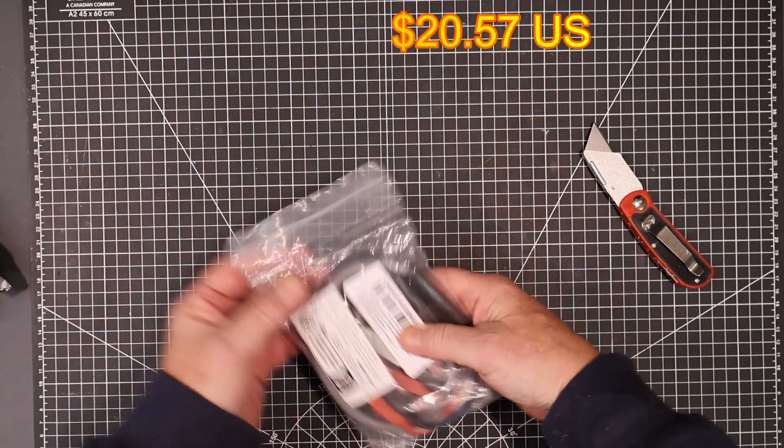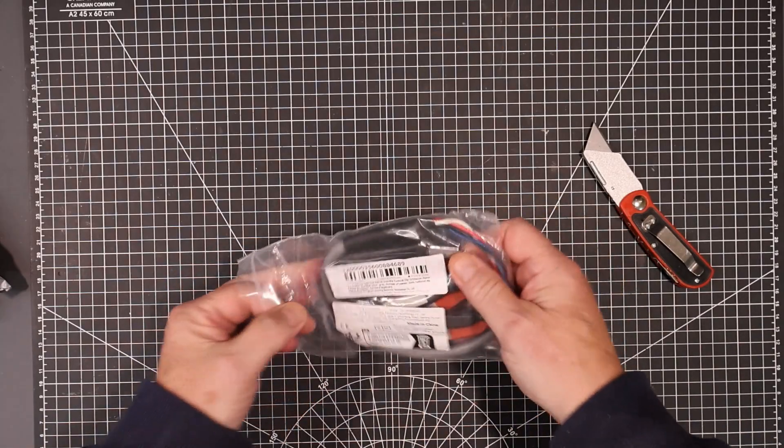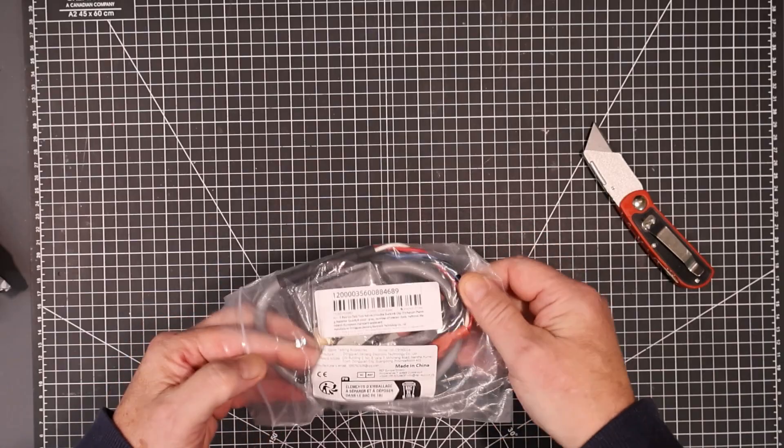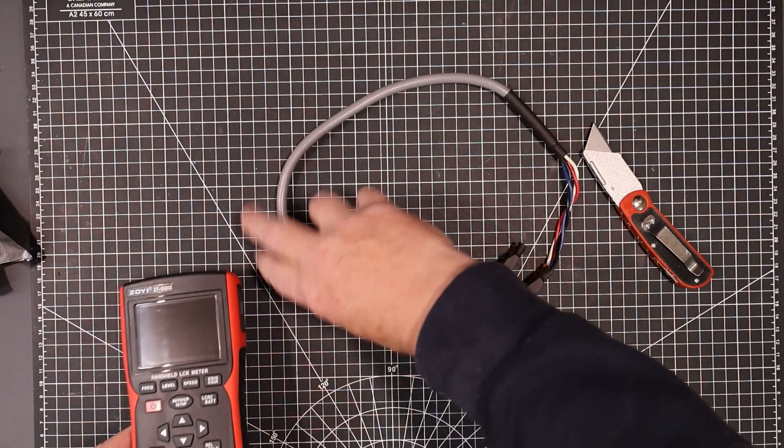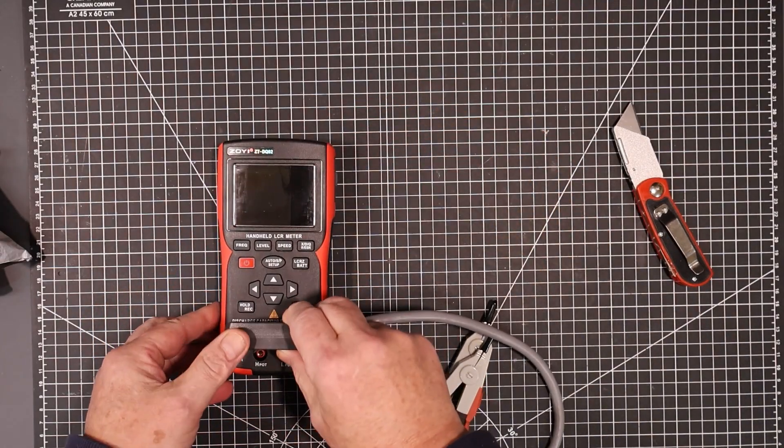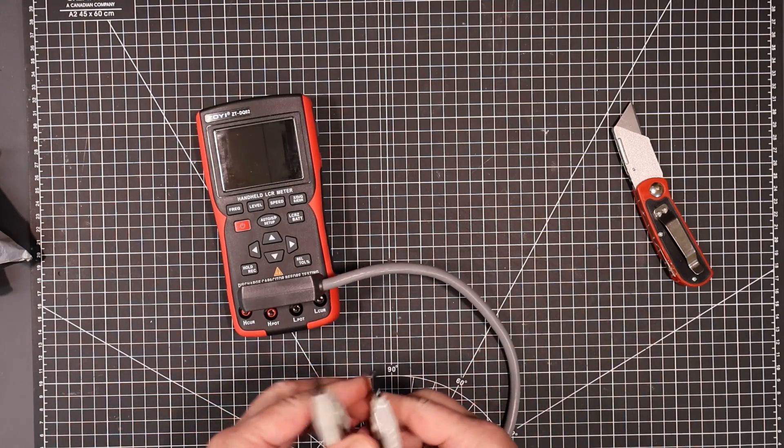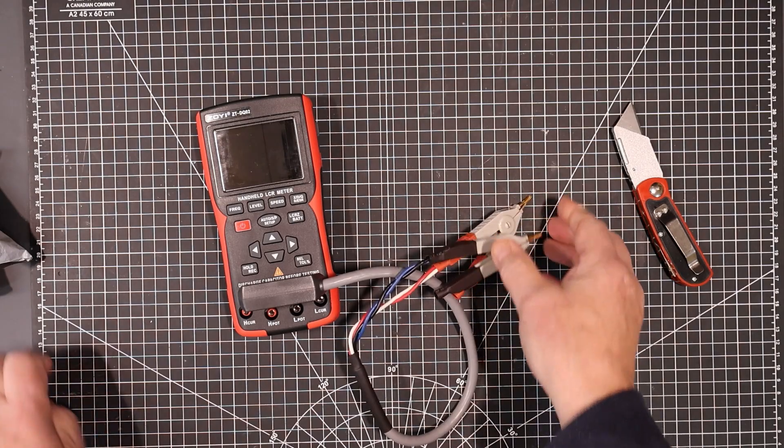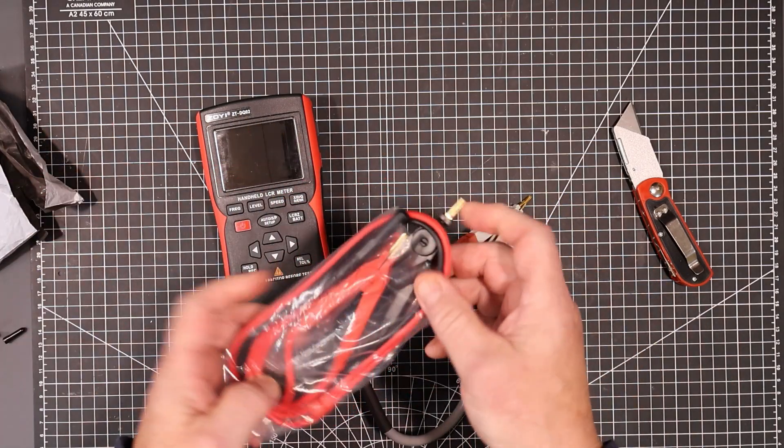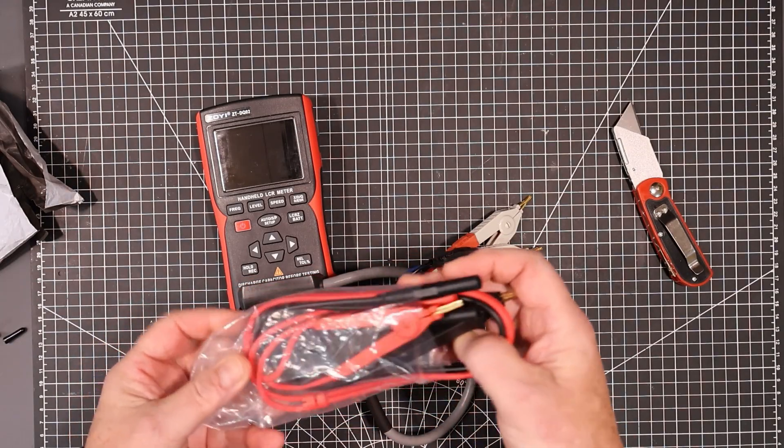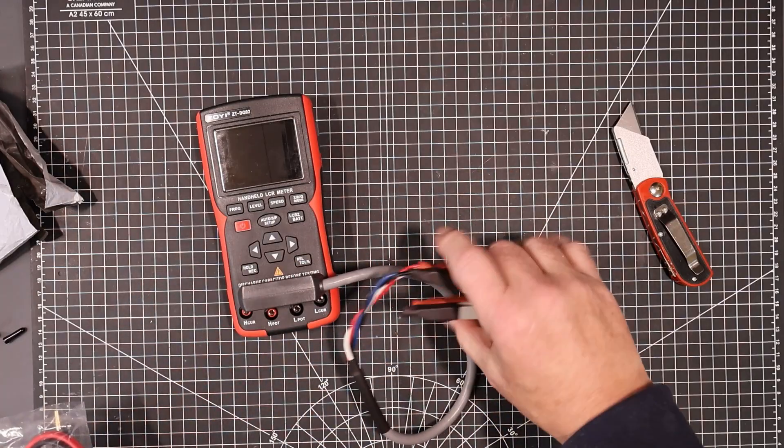Ah yes, so this here is a set of Kelvin leads that will fit into my ZOE LCR meter. Okay, let me show you that. At least I hope it'll fit. So this should go in here like this and slide it over to lock it in place and there you go and you can do four wire measurements. It's a more convenient way I think than using this arrangement here with the multiple banana plugs. So I will be officially replacing this set of leads with this set of leads.